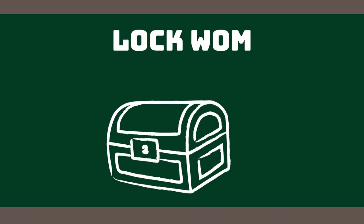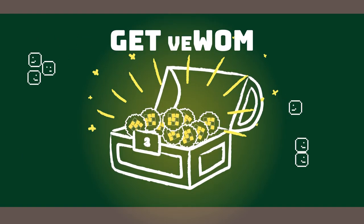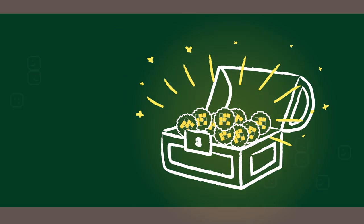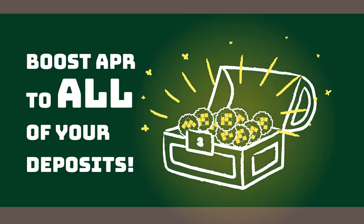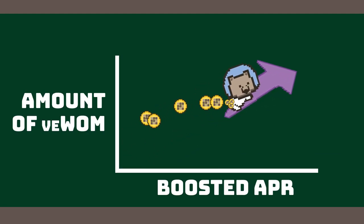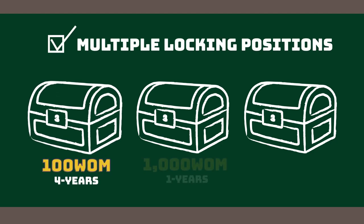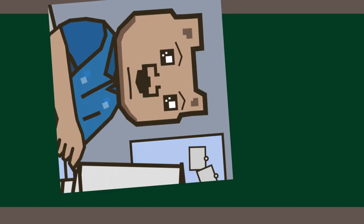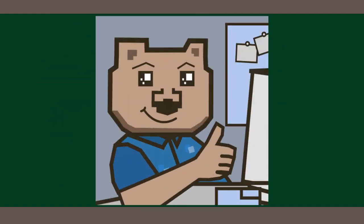Wombat Exchange VE tokenomics allows users to lock WOM for veWOM — meaning voting escrow WOM — which increases their stablecoin yield. veWOM applies an APR boost to all of your deposits, but the boost amount differs between stablecoin pools. In general, the more veWOM you possess, the higher your APR will be. Unlike current stable swaps on the market, Wombat Exchange has upgraded its locking mechanism to support multiple locking contracts with different amounts of locked WOM over different lock periods. This gives users more flexibility when committing WOM for rewards boosting.